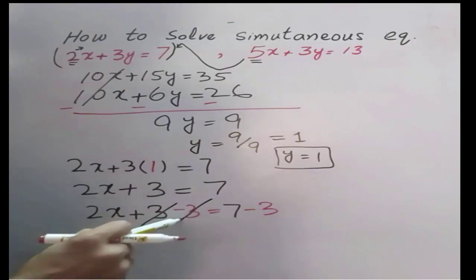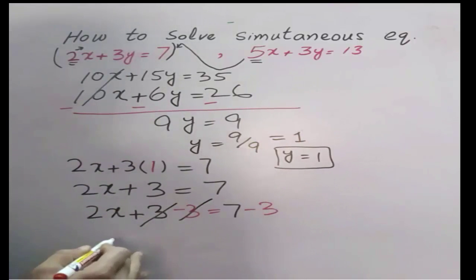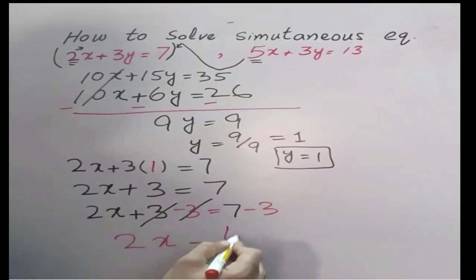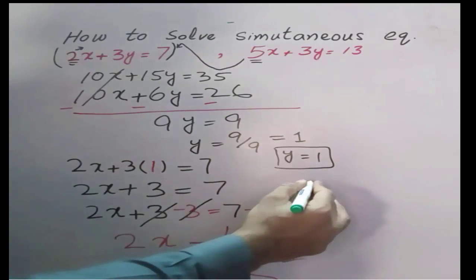This would be cut with this. 2x is equal to 4. Now the value of x is equal to 4 divided by 2 is equal to 2. So x value is 2. Our required value of x and y are 2 and 1. This is our required solution.